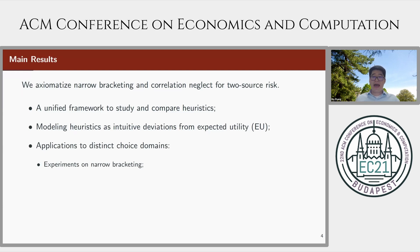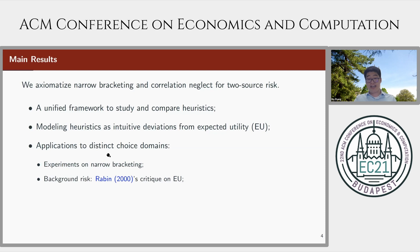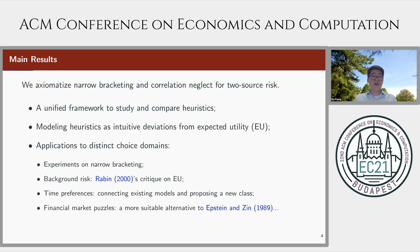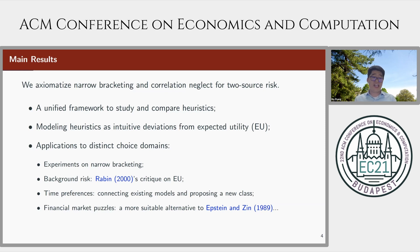Finally, the axiomatic framework is flexible enough so that we can apply our model to distinct choice domains. For instance, we can explain experimental findings on narrow bracketing. In the case with background risk, we can accommodate Rabin's critique of expected utility theory and explain risk aversion over small gambles. When different sources are consumptions in different periods, we can study time preferences and financial market puzzles. We propose one alternative to the commonly used Epstein-Zin utility function in long-run risk models. Our new utility function has the same explanatory power in these applications, and moreover, the new model is not subject to recent critiques on Epstein-Zin for its prediction of unreasonably high timing premium.